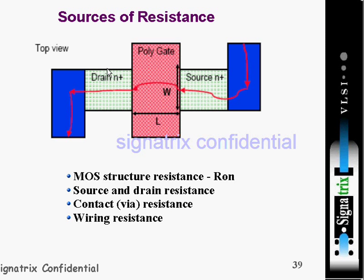Now you're seeing one figure showing the different sources of resistances. This is the layout form, where you're seeing one poly is there and drain is there, and active is there. When you run a poly on active, a transistor is formed.